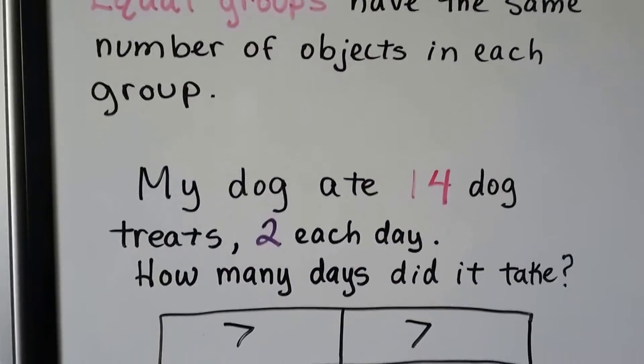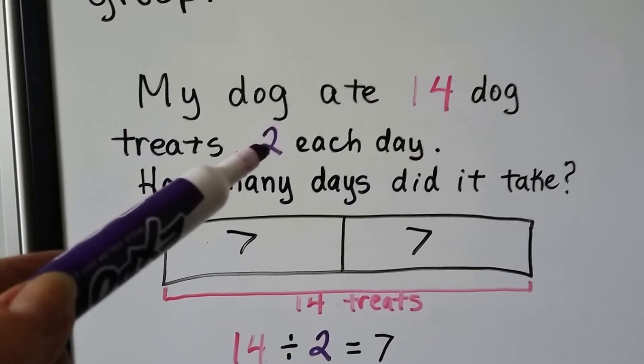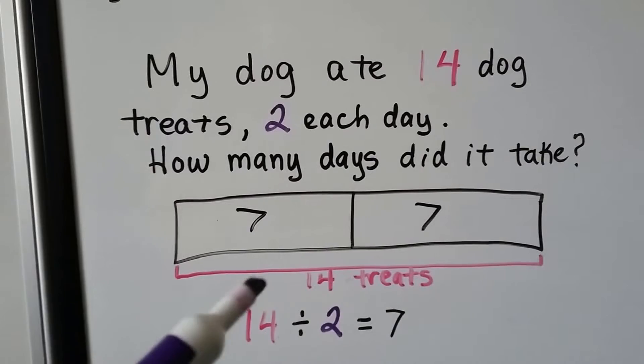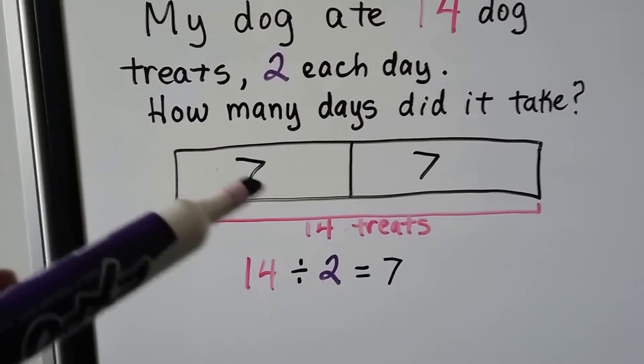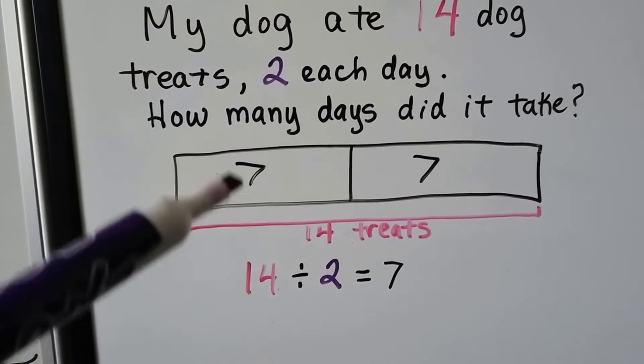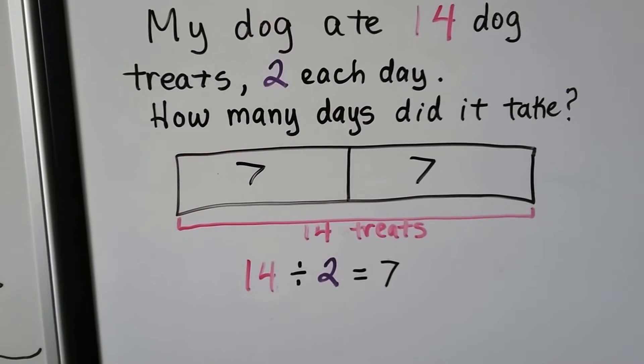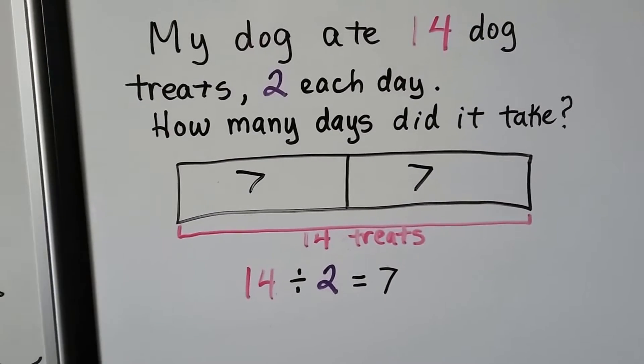So my dog ate 14 dog treats, two each day. That tells me how many boxes I need. The 14 is the total. So I've got two boxes and it has to total 14, and it's seven. It took seven days. So 14 divided by 2 equals 7. See? That's the total. That's how many boxes.